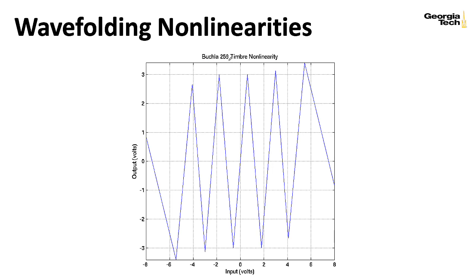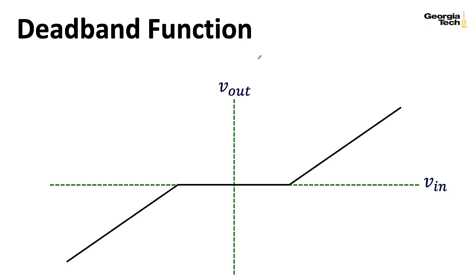Buchla referred to this kind of wave shaping as timbre creation. And the way he built this particular nonlinearity was by adding and subtracting parallel versions of a simpler nonlinearity called a deadband.